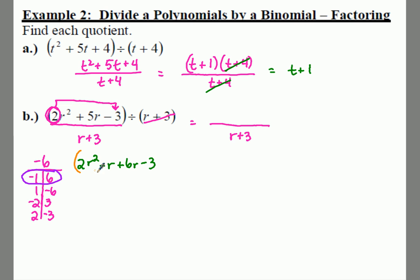So now you have four terms. We can do this by grouping. So I'm going to take out an r. Leftover, you get 2r minus 1. And then your second set of parentheses, 6r minus 3, you can take out a positive 3. And you're left with a 2r minus 1.